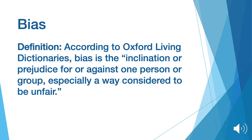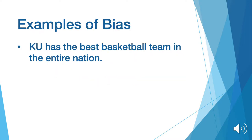Every day we come into contact with bias, and all information is biased, but what does it mean? According to Oxford Living Dictionaries, bias is an inclination or prejudice for or against one person or group, especially in a way considered to be unfair.